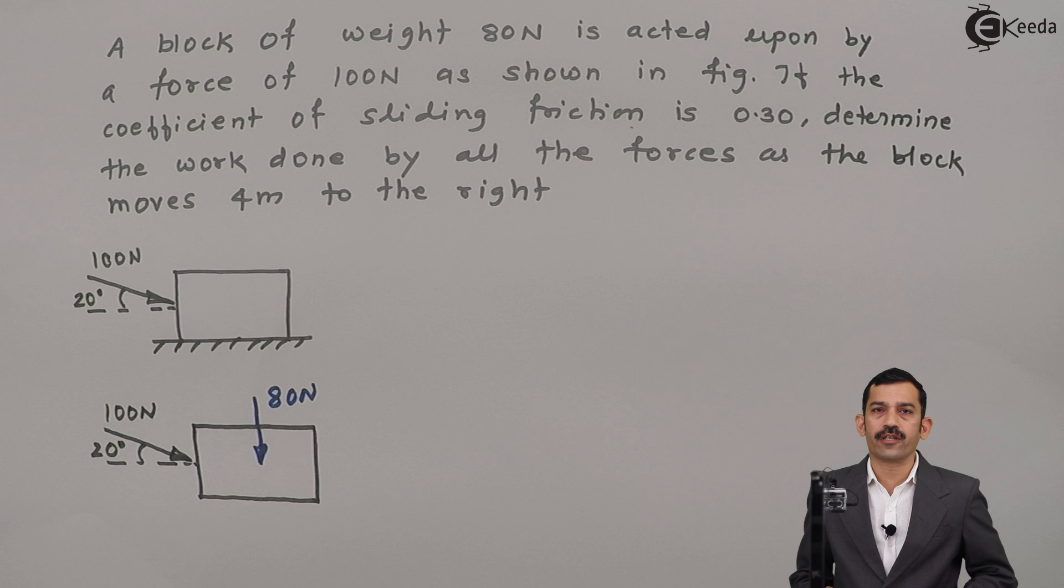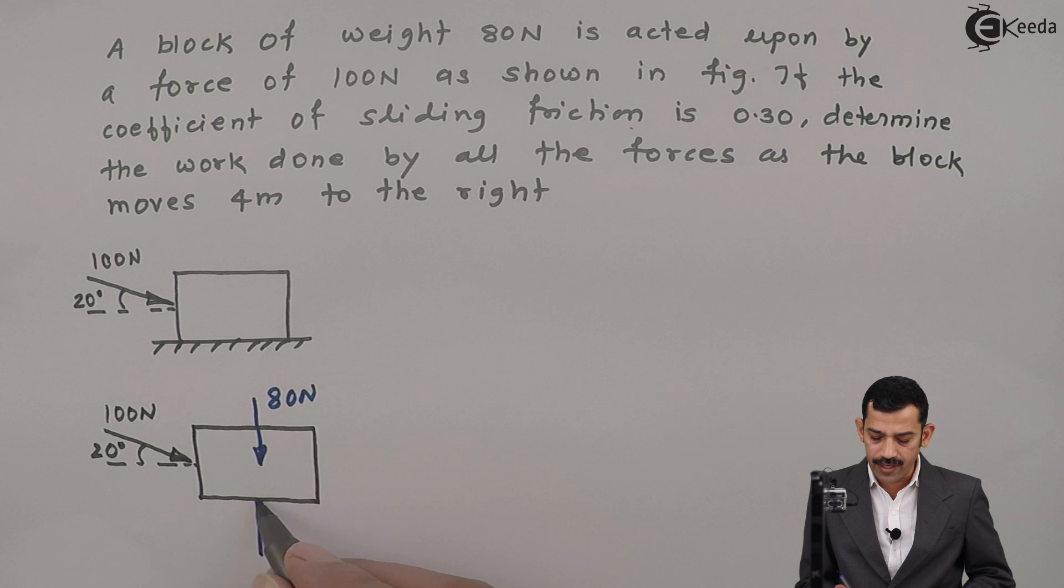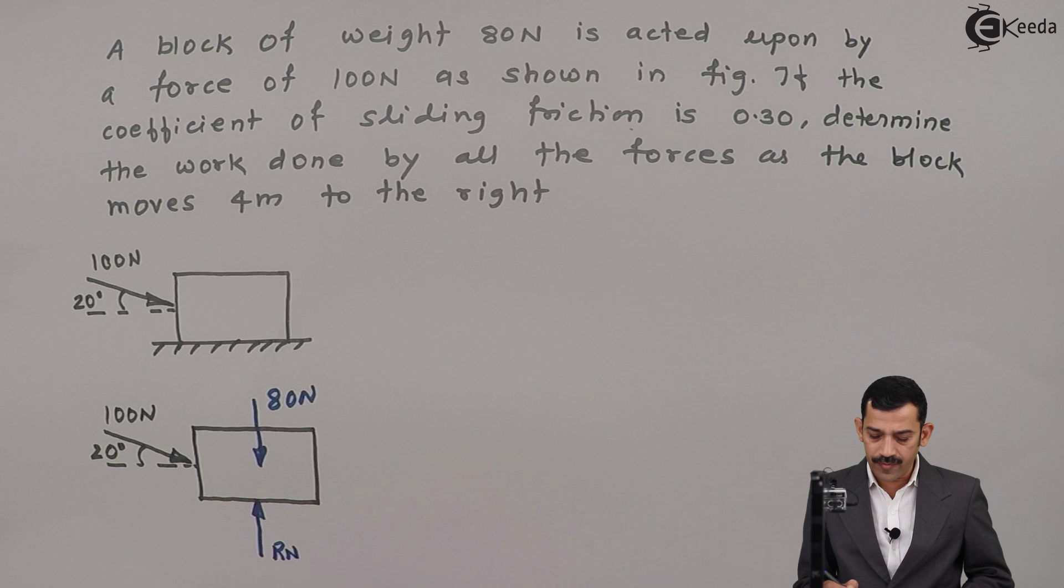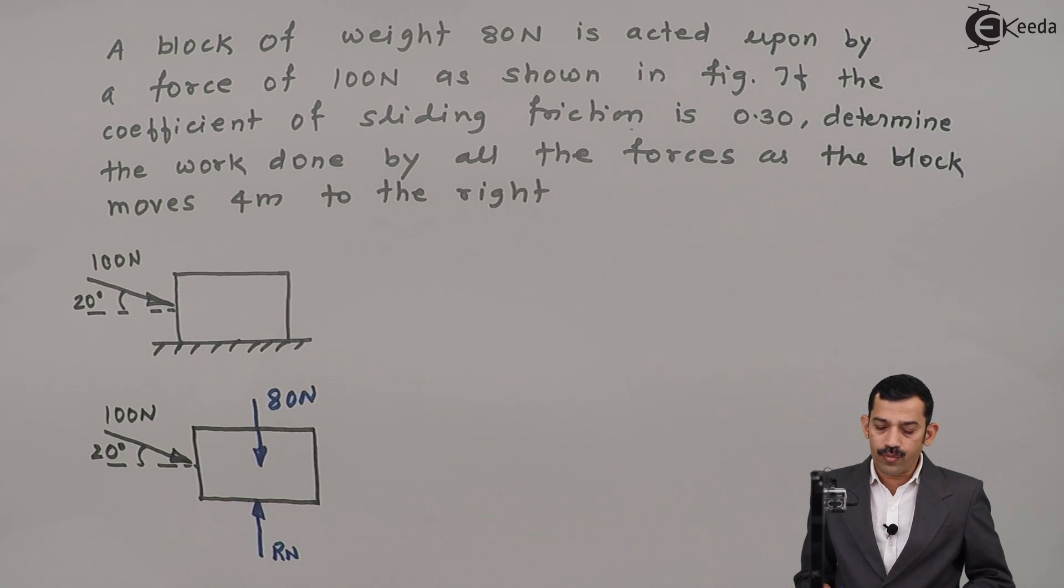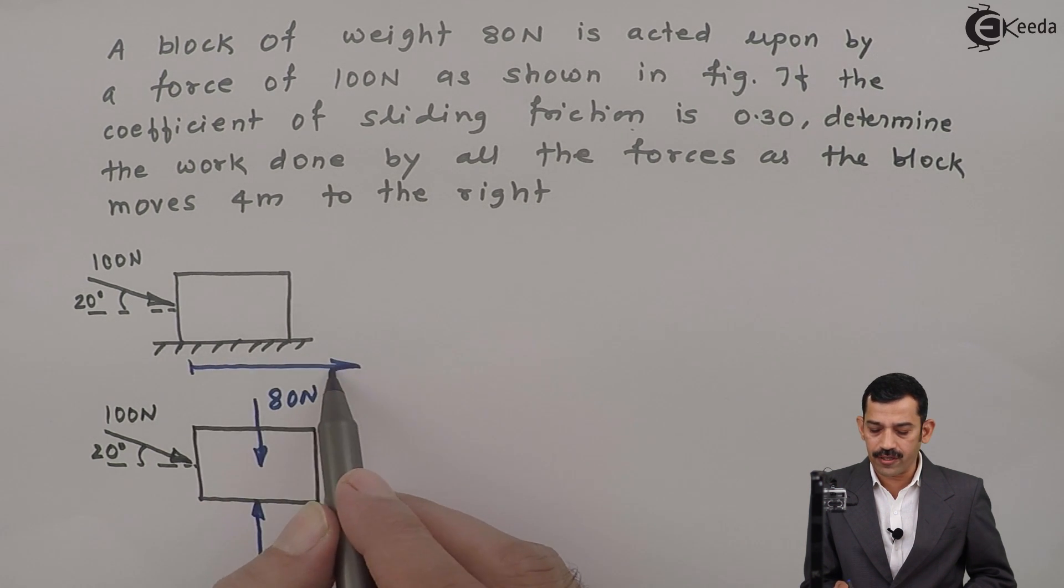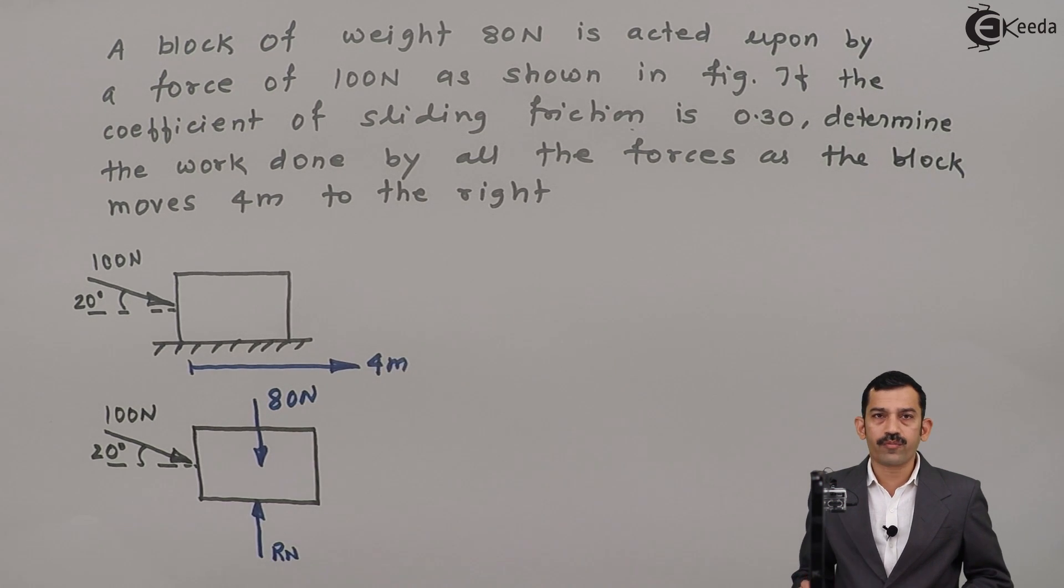As the block is resting on a horizontal plane, we will get normal reaction. Normal reaction always acts perpendicular to the contact surface and towards the body. This is RN. Now the block moves to the right by a distance of 4 meters. That means the direction of motion is rightward and displacement is 4 meters.